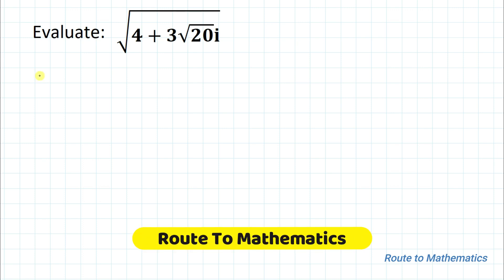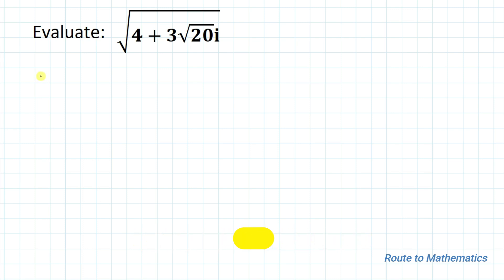Hello everyone, welcome to Root 2 Mathematics. In this video we are going to solve an interesting question involving complex numbers. The given question is: evaluate the square root of (4 + 3√20·i). We are asked to find the value of this given complex number.